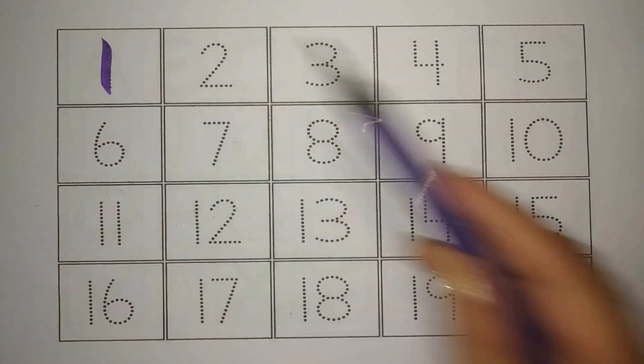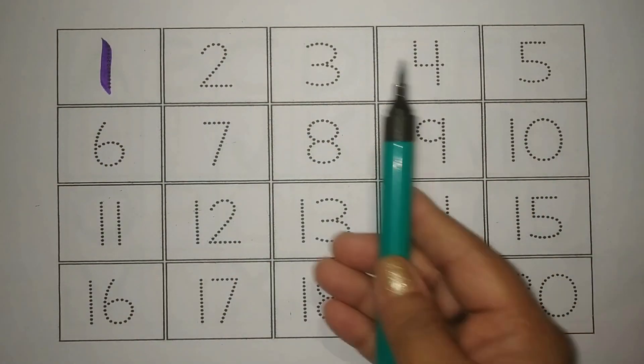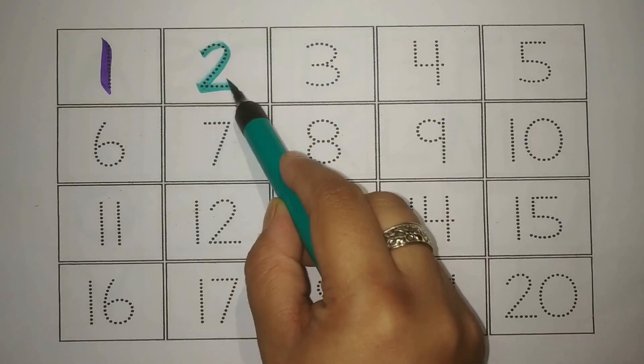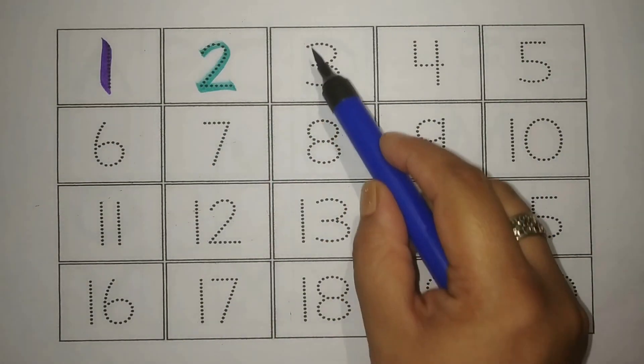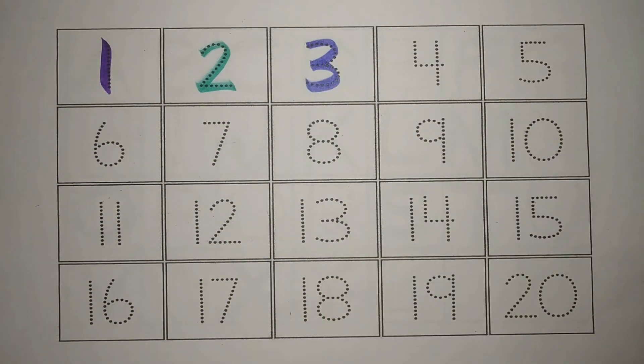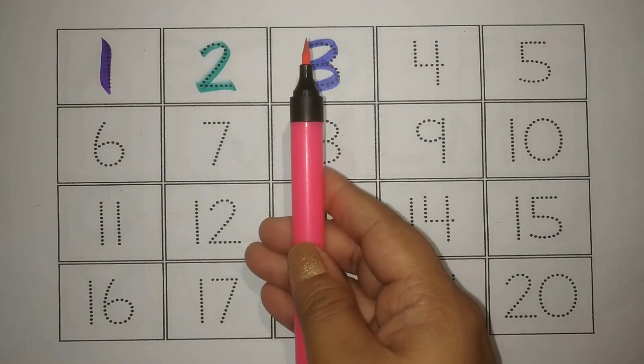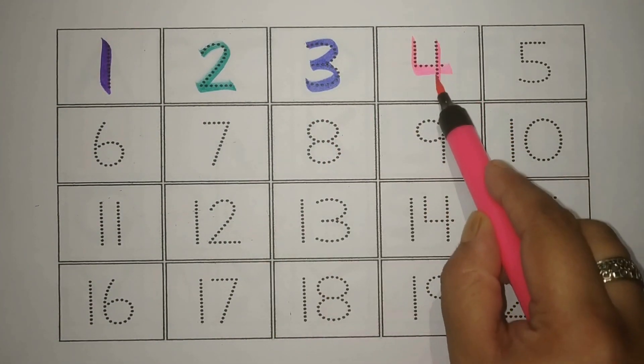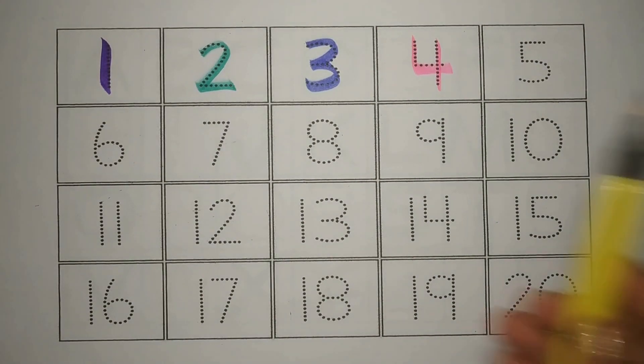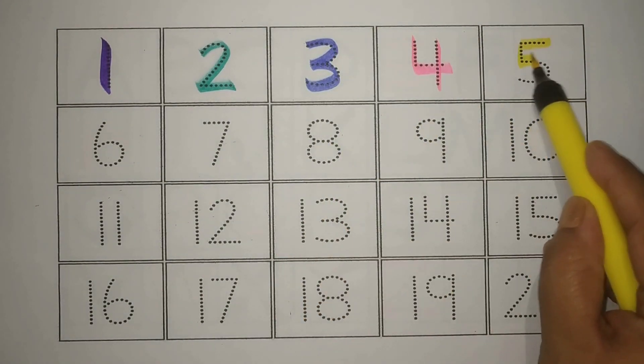Purple one, egg. Green two, doh. Blue three, teen. Pink four, chaar. Yellow five, paanch.